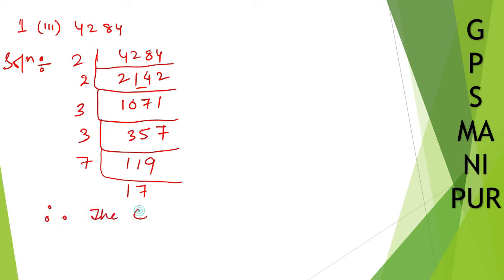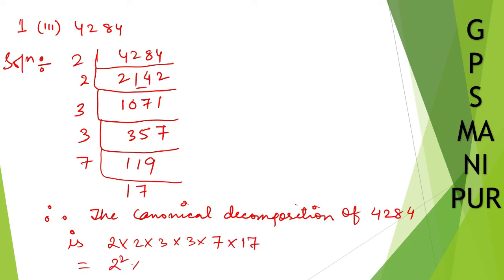So therefore, the canonical decomposition of 42,884 is 2 into 2 into 3 into 3 into 7 into 17. So 2 into 2, I can write down 2 square into 3 into 3, 3 square into 7 into 17.